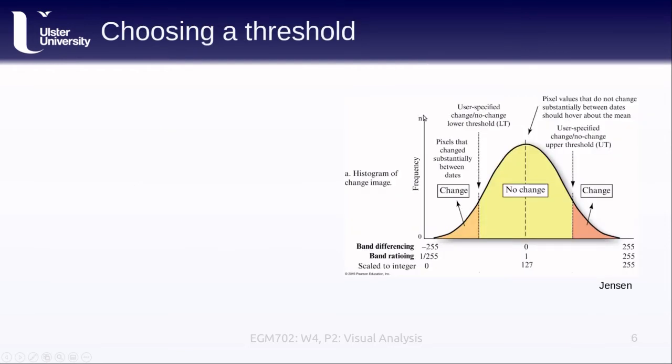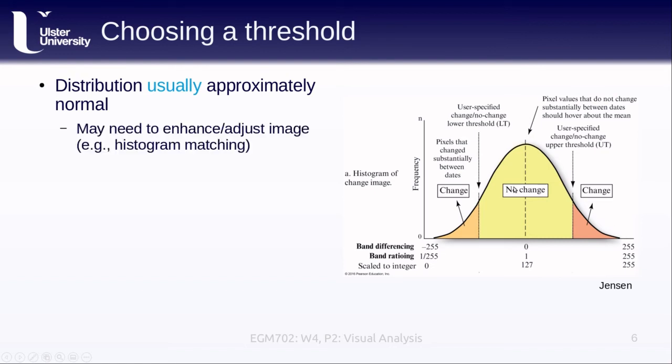When we're choosing a threshold, one thing to keep in mind is that the distribution of our differences or of our ratios is usually approximately normal. That is, it follows a normal distribution or fairly close. And we might also need to enhance or adjust the image in order to help make sure that this is the case. For example, we could use histogram matching to make sure that the brightness levels are approximately the same.